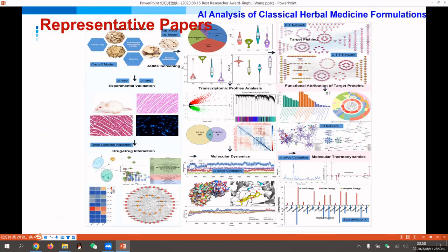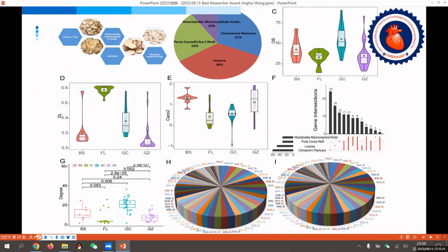In this paper, we used artificial intelligence and deep learning algorithms for the first time and combined in vitro and in vivo experiments to analyze the mechanism of classical herbal compound prescriptions. First, the active ingredients were screened by support vector machine and random forest, and the screening model was constructed.